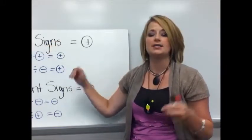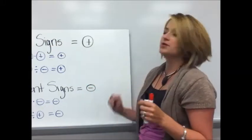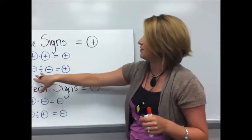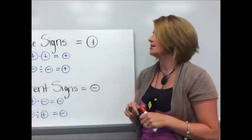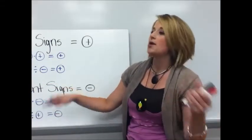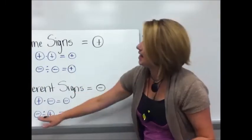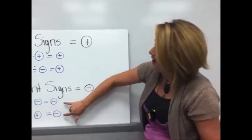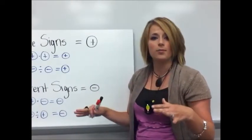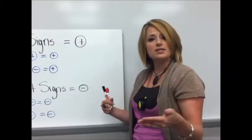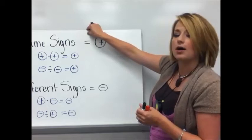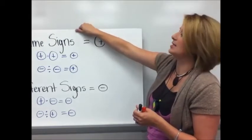So if you have the same signs that you're putting together your answer is going to be positive. Anytime I'm multiplying or dividing. If I have two positives I'm going to have a positive. If I have two negatives my answer is positive. If I have different signs, if I'm multiplying a positive and negative or a negative and a positive, I'm dividing a negative and a positive or a positive and a negative, my answer is going to be negative. So you just multiply or divide like normal and then based on what signs your factors were, different signs is negative, same signs are positive.